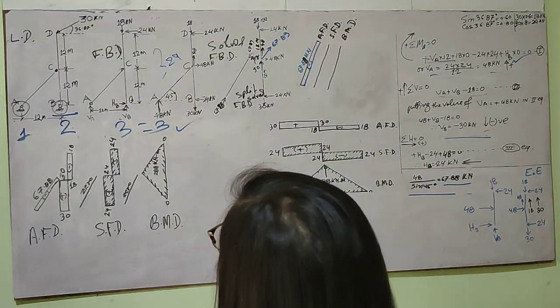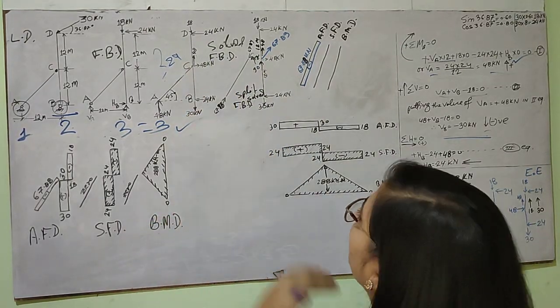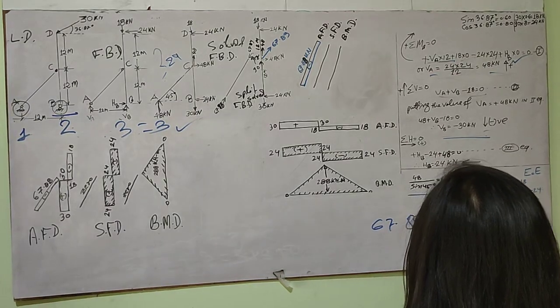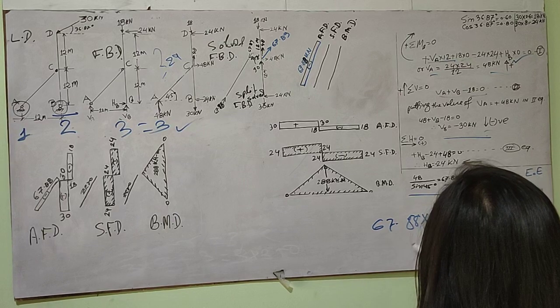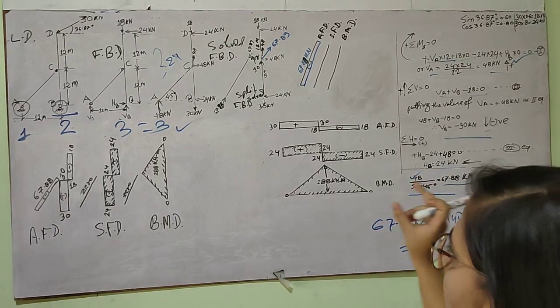Now if we resolve it, 67.88 into sin 45 will give 48, which is the same. So this is 48 acting towards the right.